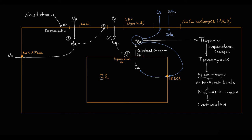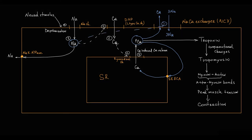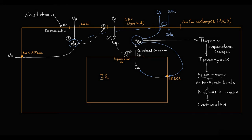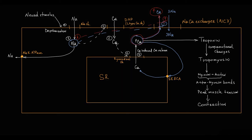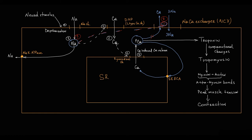The problem is that because the energy for calcium export is provided by sodium import, the activity of the sodium-calcium exchanger is highly dependent on intracellular sodium concentration. High intracellular sodium decreases the activity of the exchanger. For example, if cytosolic sodium decreases, exchanger activity increases and more calcium is exported. Conversely, if cytosolic sodium increases, exchanger activity decreases, causing less calcium to be transported out, so more calcium remains inside the cell.